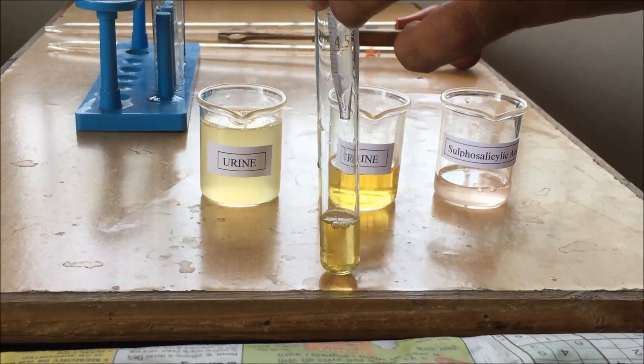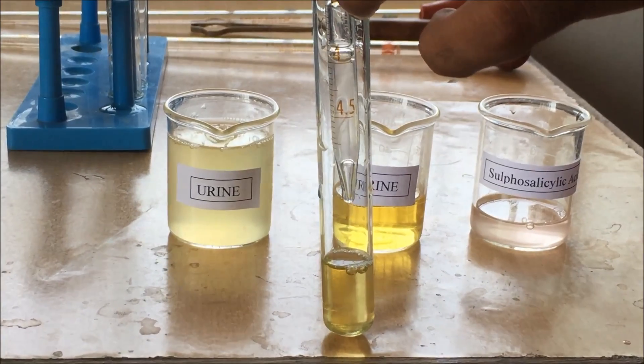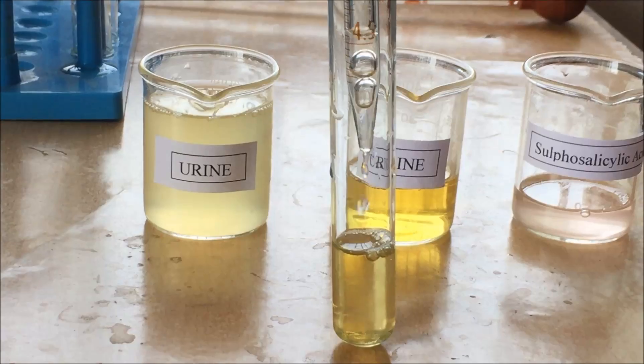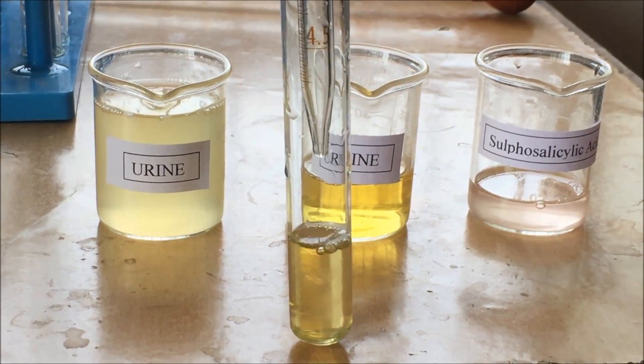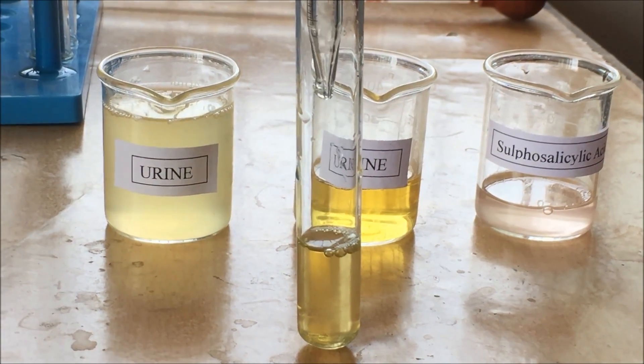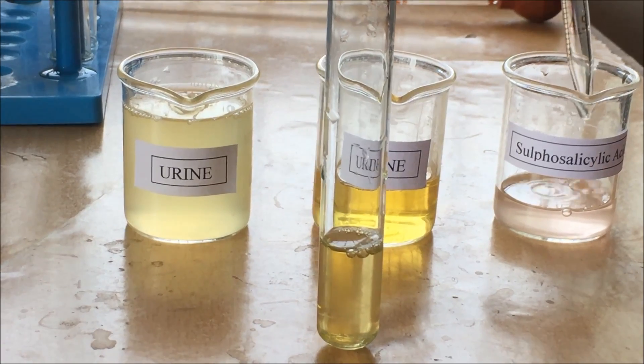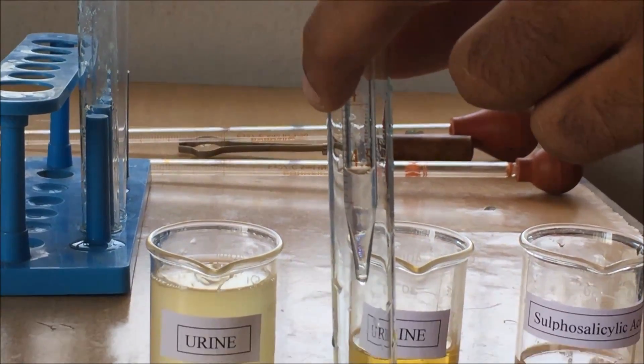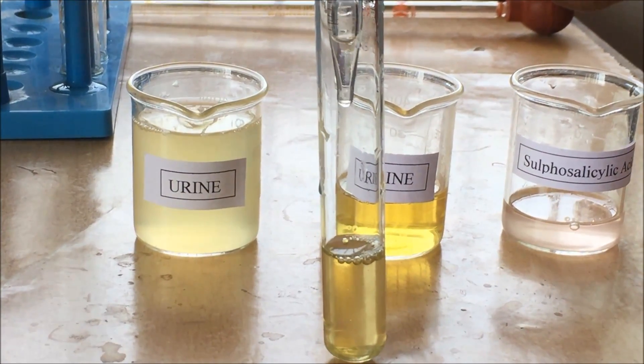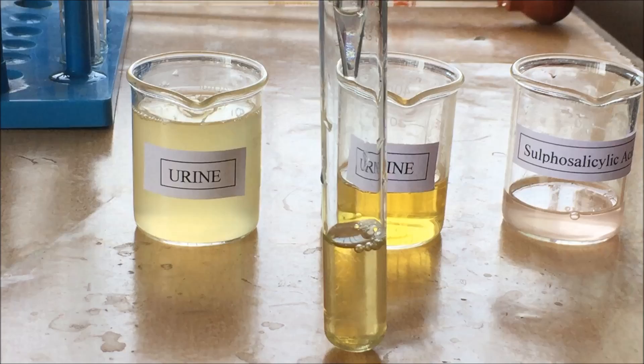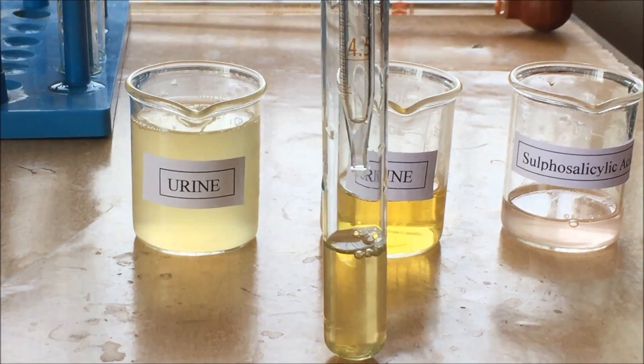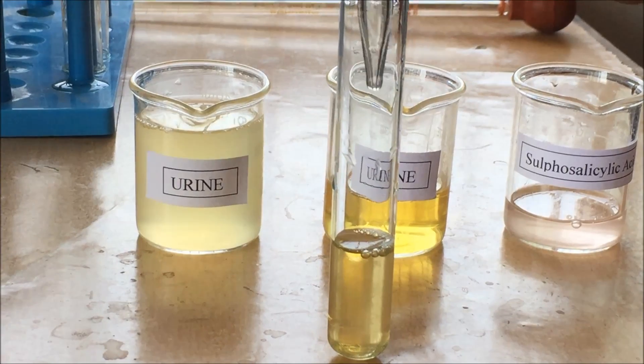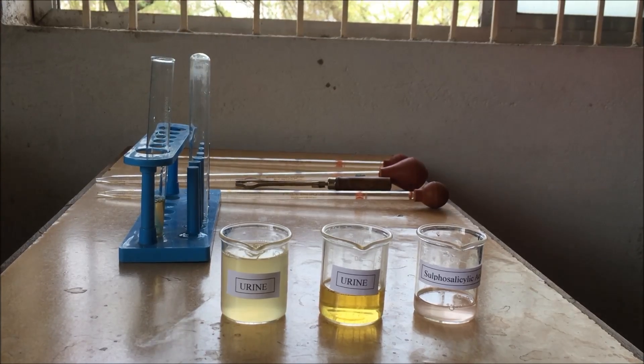We are now adding sulfosalicylic acid drop by drop over the urine solution. If there is albumin in the urine sample, sulfosalicylic acid will denature the protein and form white cloudiness or turbidity, indicating the presence of albumin. But we are not getting any white precipitate or cloudiness here, so it indicates a negative result.